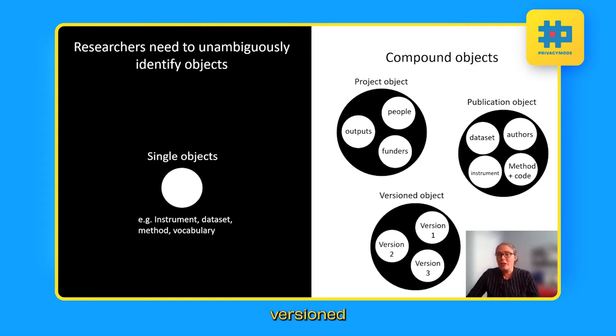This can all be expressed as a single object as an example. And finally, versioned objects are another example of things like you could have a publication version one, version two, version three, and so on. So it can all be called the same thing, but you can follow the history along.